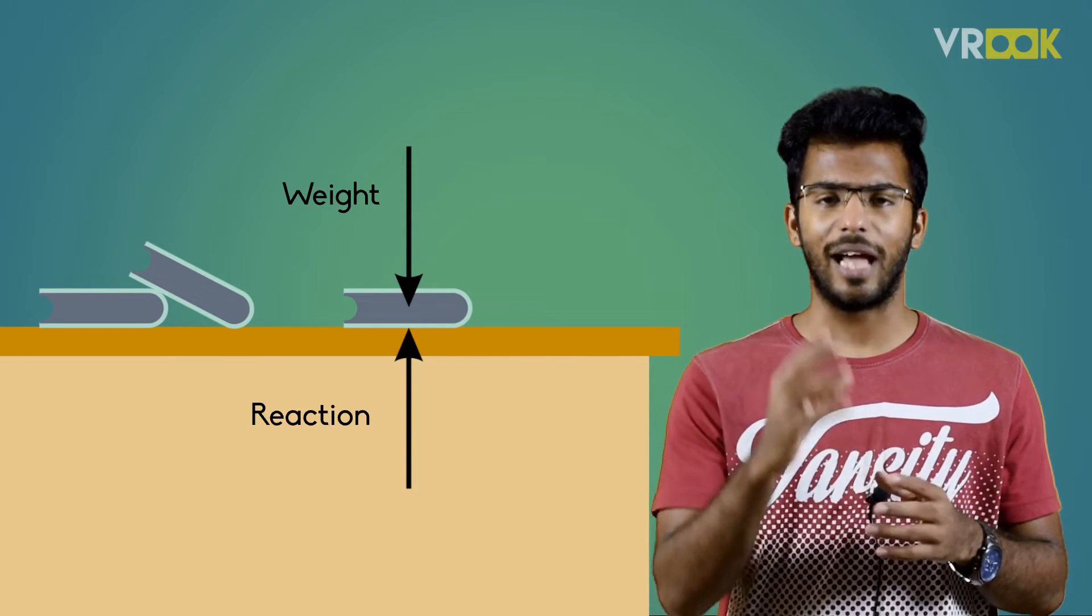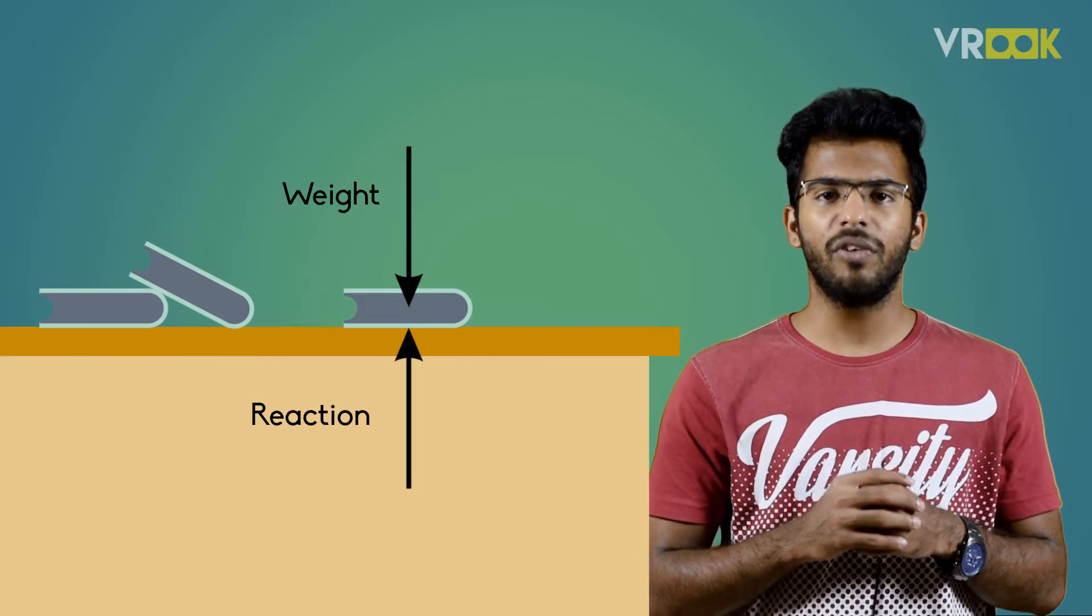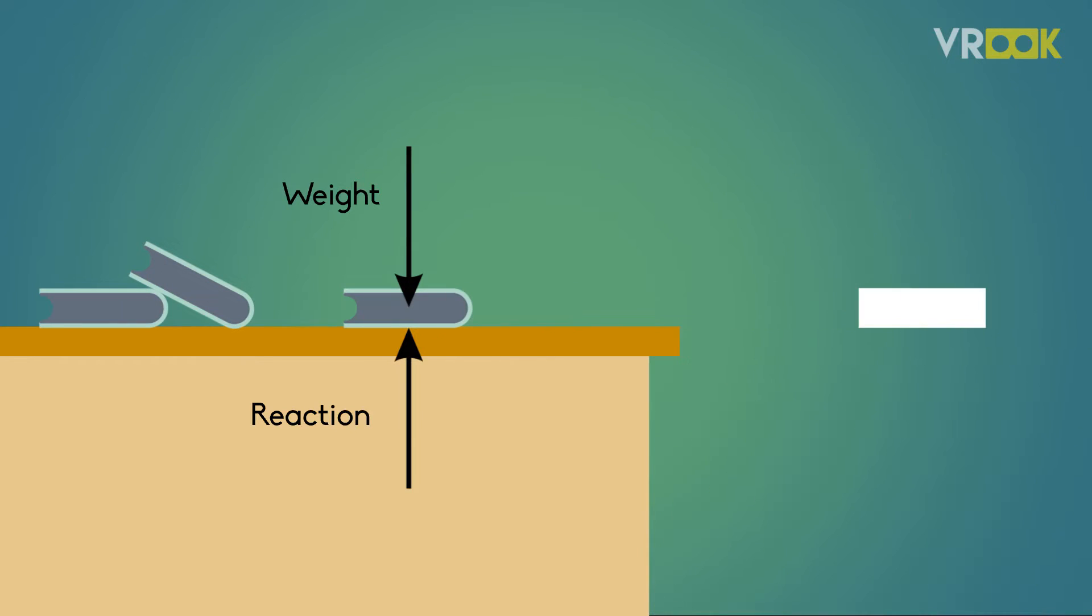These are the two forces acting on the book. We can represent the book as a simple box and write these forces. This is the FBD of book resting on a tabletop.